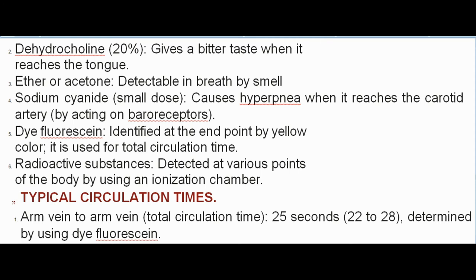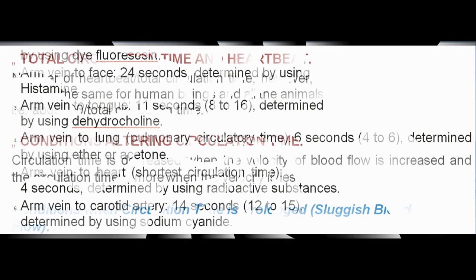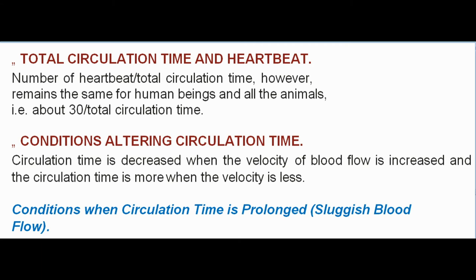Typical circulation times: Arm vein to arm vein (total circulation time): 25 seconds (22–28), determined using difluorescein. Arm vein to face: 24 seconds, determined using histamine. Arm vein to tongue: 11 seconds (8–16), determined using dehydrocholine. Arm vein to lung (pulmonary circulatory time): 6 seconds (4–6), determined using ether or acetone. Arm vein to heart (shortest circulation time): 4 seconds, determined using radioactive substances. Arm vein to carotid artery: 14 seconds (12–15), determined using sodium cyanide. The ratio of number of heartbeats to total circulation time remains about 30 for human beings and all animals.